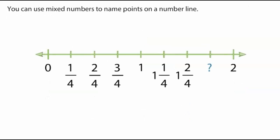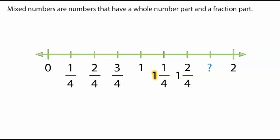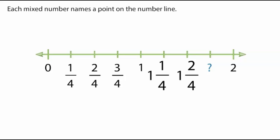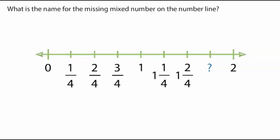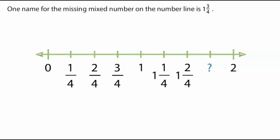You can use mixed numbers to name points on a number line. Mixed numbers are numbers that have a whole number part and a fraction part. Each mixed number names a point on the number line. What is the name for the missing mixed number on the number line? One name for the missing mixed number on the number line is one and three-fourths.